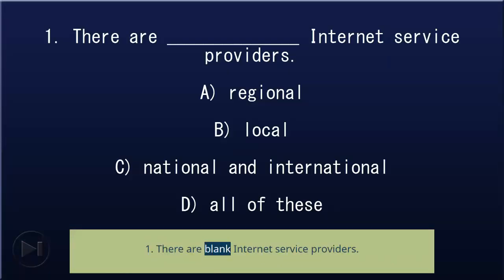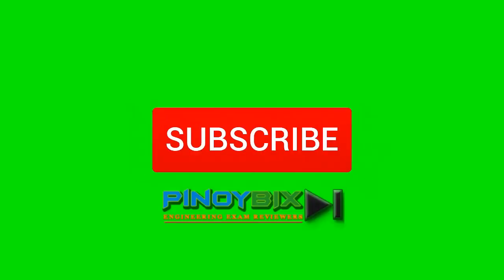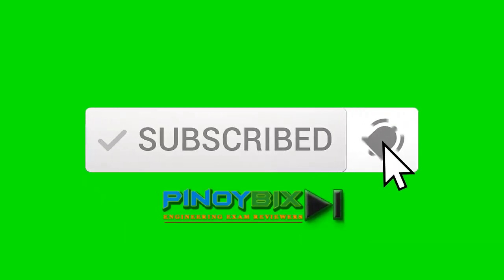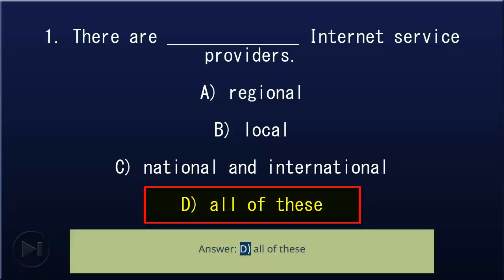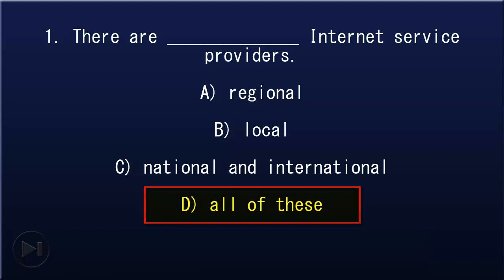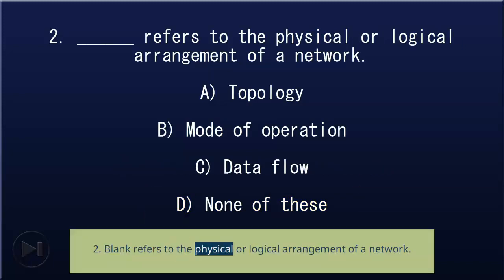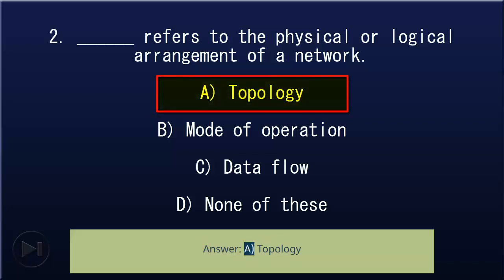1. There are blank internet service providers: A) regional, B) local, C) national and international, D) all of these. Answer: D, all of these. 2. Blank refers to the physical or logical arrangement of a network: A) topology, B) mode of operation, C) data flow, D) none of these. Answer: A, topology.